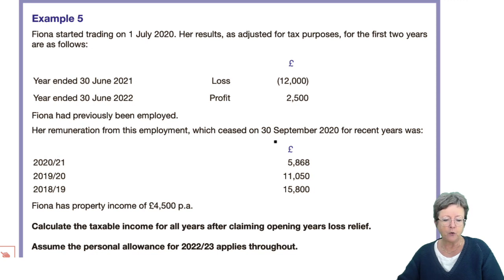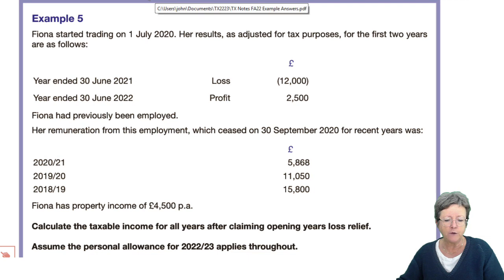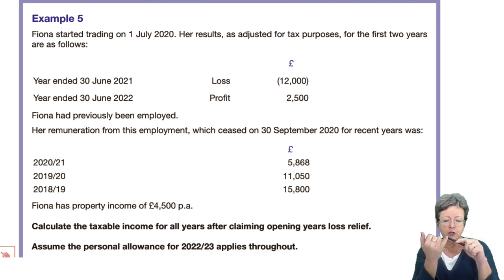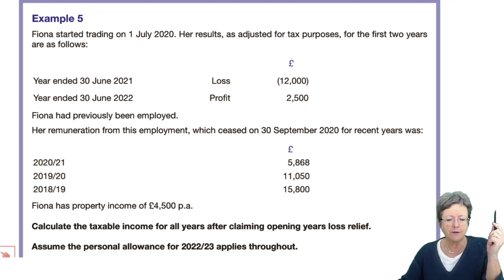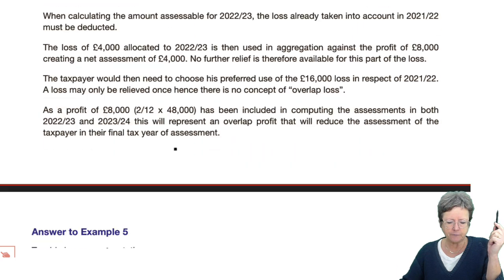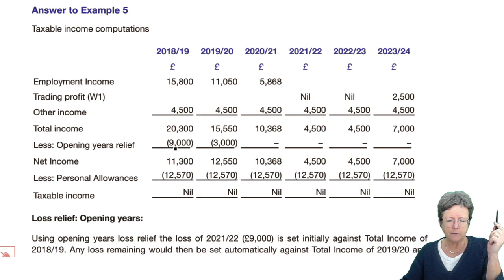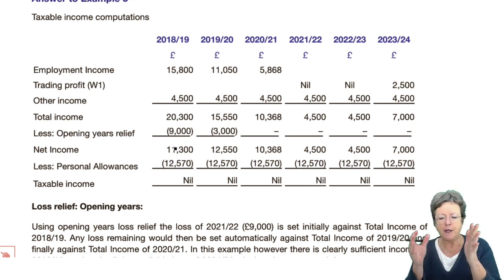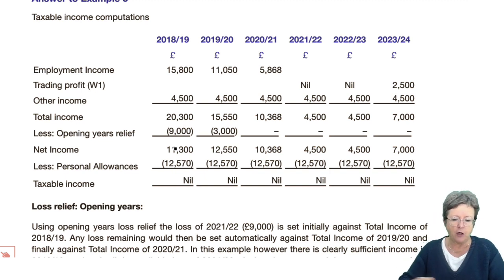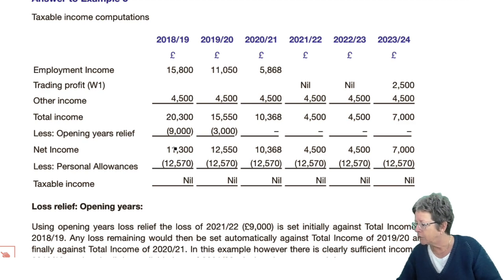She's got a job, property income, and losses and trade profits — all of those need to be dealt with. So let's look at the answer. Now we've set all these years out. First things first with any of these situations: set up the pro forma. The year of loss was 2021.